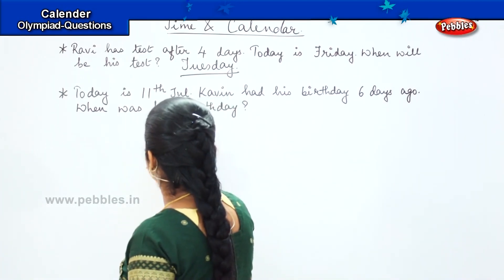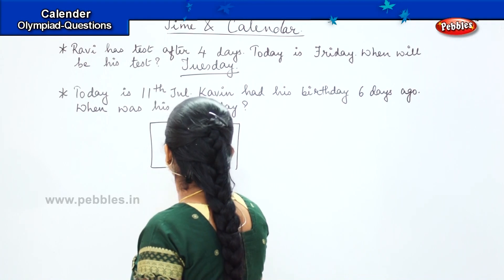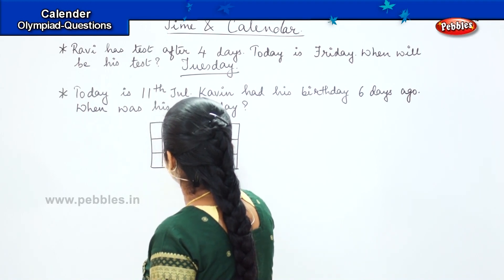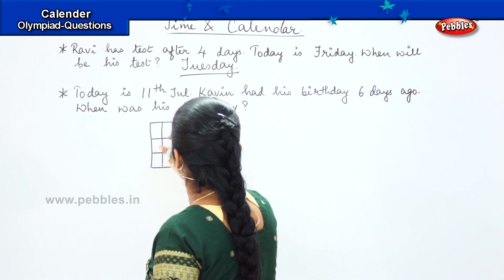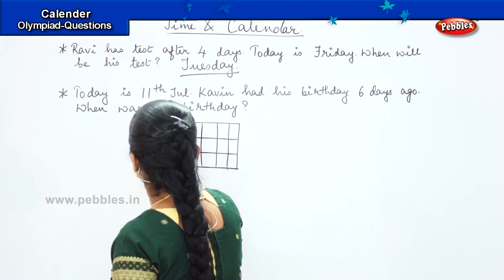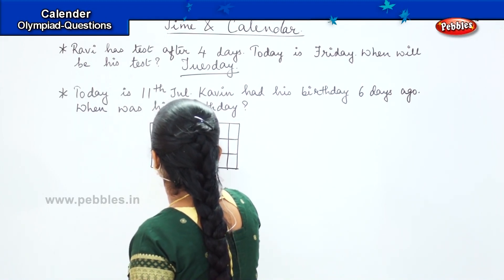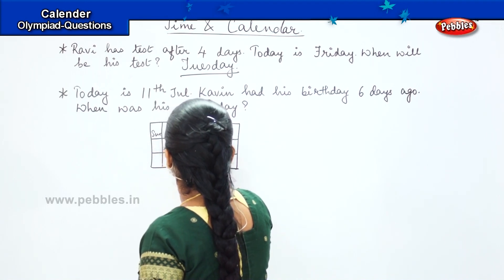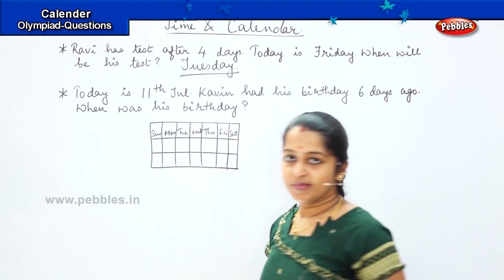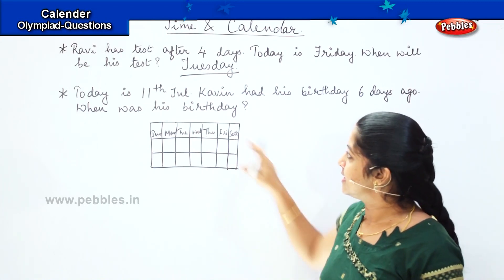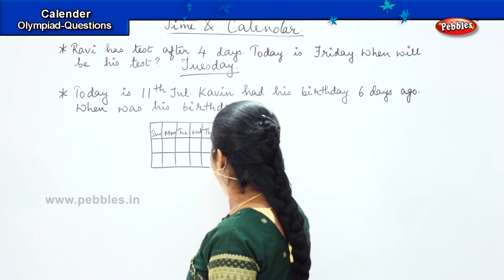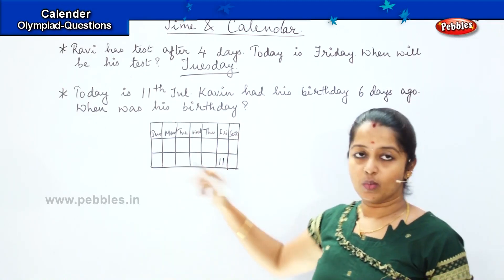So what we will do is draw a small calendar. You need not draw all the days because we have to find six days back. Just draw seven columns and mention Sunday, Monday, Tuesday, Wednesday, Thursday, Friday and Saturday. Today is 11th and today is Friday. So assume that 11th is here on Friday. Now we will do a backward counting.